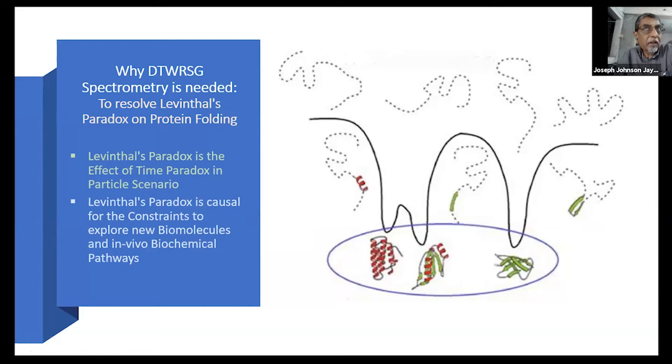So why this spectrometry is needed? Because Levinthal paradox is the subsequent effect of time paradox in particle physics. Because of that, there are constraints in exploring new biomolecules and constraints in exploring new in vivo biochemical pathways. Altogether, there is limitation to develop real-time therapeutic devices by molecular management. So that is the future objectives based on which this spectrometry is defined.